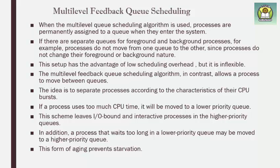This promotion concept is called aging. A process that is waiting for the CPU but is unable to get it enters a state called starvation. To prevent starvation, we increase the priority of lower priority processes through the aging mechanism.